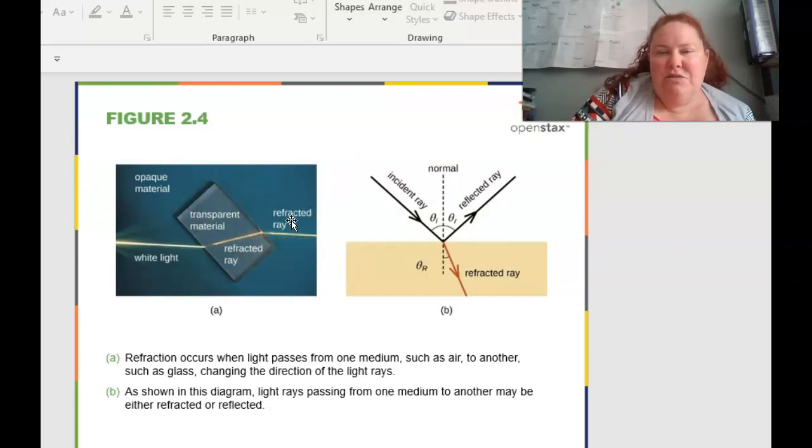We talked a little bit about this in class in refraction. Refraction occurs when the light passes from one medium, like air, to another, such as the surface of the glass. And then this is going to change the direction of light rays. You can see that a little bit more in this figure, where the light rays pass from one medium to another, and it may either be refracted or reflected. So reflected is going to be bounced off. You can see the incident ray comes in, and then it's reflected.